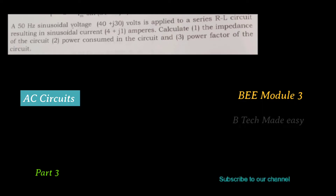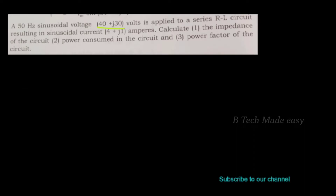A 50 hertz sinusoidal voltage of 40 plus J30 volts is applied across a series RL circuit, resulting in a sinusoidal current of 4 plus J1 ampere. Calculate the impedance of the circuit, power consumed in the circuit, and power factor of the circuit.